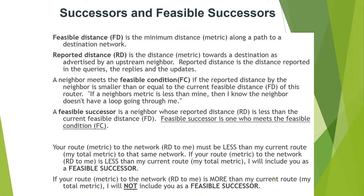The feasible distance (FD) is the minimum metric along the path to a destination network. The reported distance (RD), also called advertised distance, is the metric toward a destination as reported by an upstream neighbor. The reported distance is included in the query, reply, and update messages.